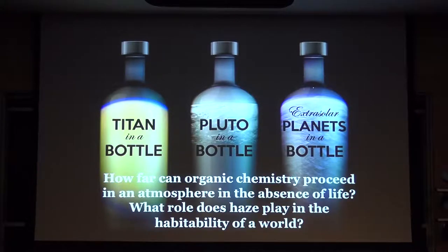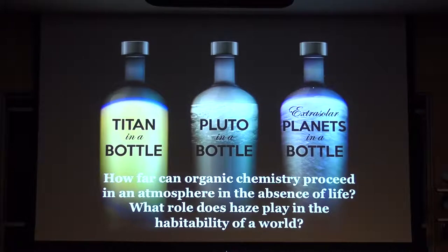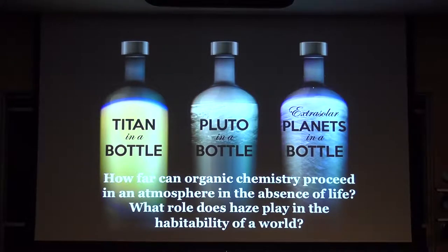Another big question is what role haze plays in the habitability of a world. Particles interact with light differently than gases do, so a haze layer can strongly affect the temperature structure of an atmosphere—potentially making the difference between water being liquid on the surface or not. Haze particles may also shield UV photons, which we think may have happened on early Earth with a global haze layer, protecting nascent life from harmful UV. And these particles might serve as a source of material for the origin of life based on what they're composed of.